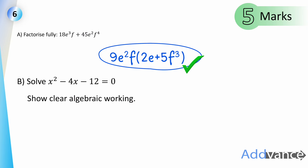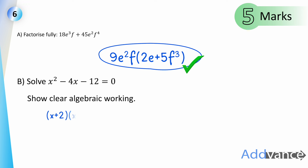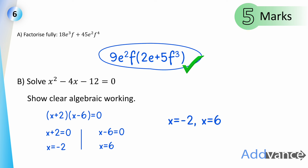Part B: solve x² − 4x − 12 = 0, showing clear algebraic working. We need two numbers that multiply to −12 and add to −4: those are 2 and −6. So we factorise as (x + 2)(x − 6) = 0, giving x = −2 or x = 6. That is full algebraic working for question 6, earning 5 marks.